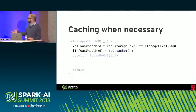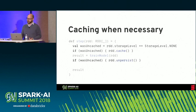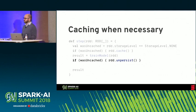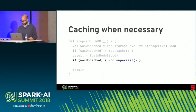A better approach is to not make any assumptions. By checking the storage level of the RDD, we can see if we need to cache it, so that we only cache collections the user hasn't already cached. Since we now know whether we needed to cache at the entry of the function, we can also clean up behind ourselves — un-caching the collection only if the user hadn't cached it.